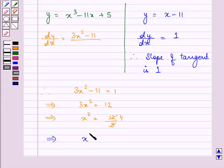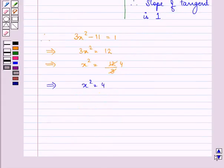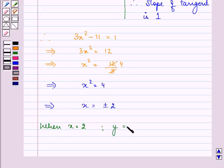So we have x square equal to 4, giving us the value of x as plus minus 2. When x is equal to 2, the value of y is equal to x minus 11, that is 2 minus 11, which is equal to minus 9.